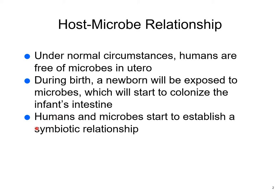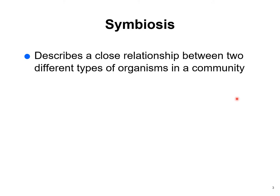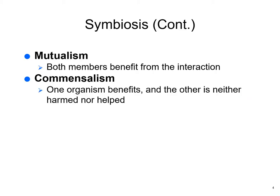Humans and microbes develop a symbiotic relationship. Symbiosis is a relationship between two different types of organisms in a given community. We have mutualism, where both members benefit from the interaction. The perfect example in humans is gut bacteria that make vitamins. The bacteria protect you from bad bacteria, and what you give the bacteria is a place to hang out and food to eat.